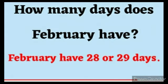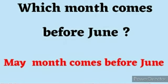How many dates does February have? February has 28 or 29 dates. Next question: which month comes before June? Your answer is May — May month comes before June.